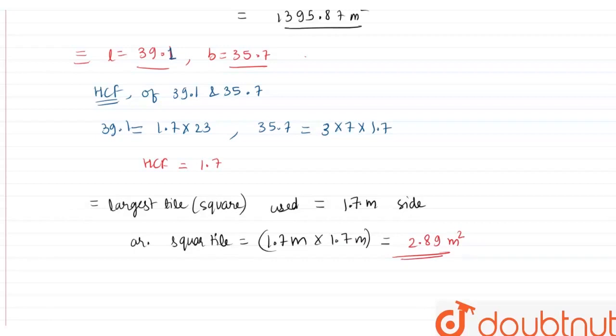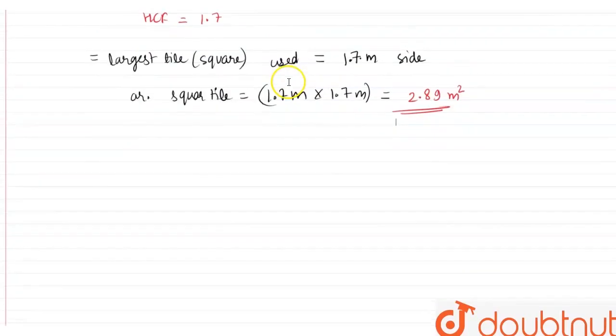Now second is we need to find the number of square tiles, all right? So the number of square tile can be found by dividing the total area of room by the area of one tile.